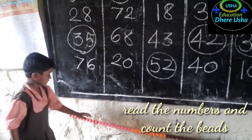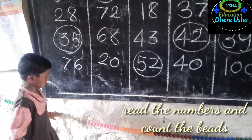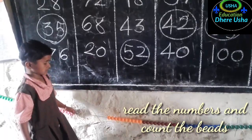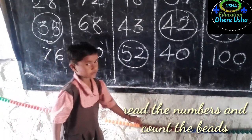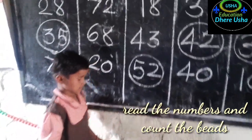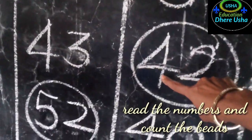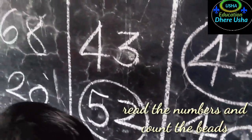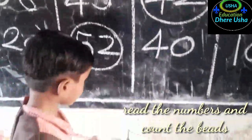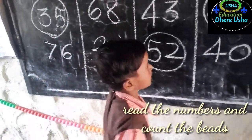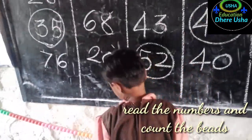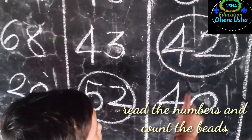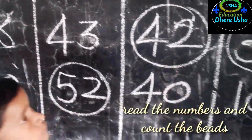One ten, two tens, three tens, four tens. How many tens? Four tens. How many units? Two units. One, two. These beads are forty-two. Very good.